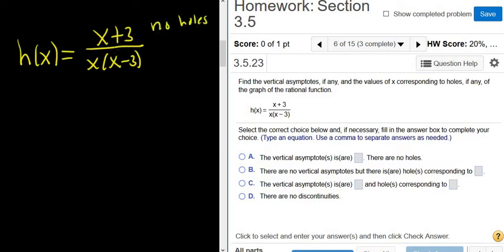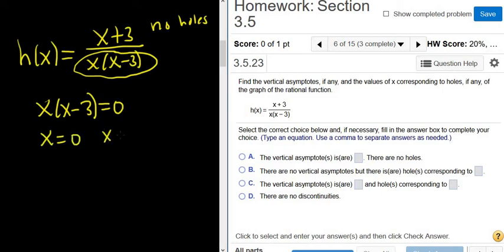After we've made sure nothing cancels, we take the bottom and set it equal to 0. That's how we find vertical asymptotes. If x times (x minus 3) equals 0, that means x equals 0 or x minus 3 equals 0. So x equals 0 or x equals 3, and those are our vertical asymptotes.